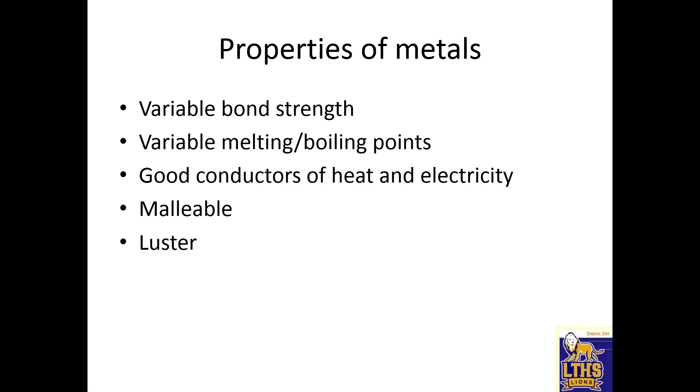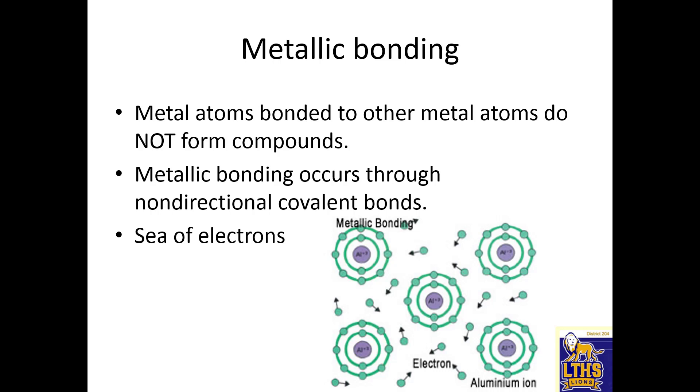Besides acids, we have to talk about metals and some other compounds. Metals have variable bond strength, variable melting points and boiling points but often high, and good conductors of heat and electricity. They're malleable and they're shiny. We test the properties of metals a lot. You hit them with a hammer, they bend. They conduct electricity in a solid state.